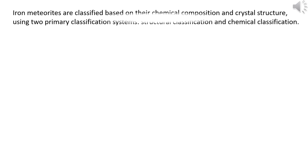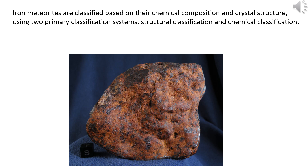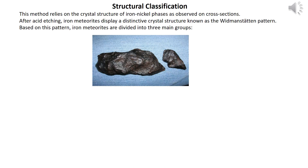Iron meteorites are classified based on their chemical composition and crystal structure using two primary classification systems: structural classification and chemical classification. Structural classification relies on the crystal structure of iron-nickel phases as observed on cross-sections. After acid etching, iron meteorites display a distinctive crystal structure known as the Widmanstätten pattern. Based on this pattern, iron meteorites are divided into three main groups.